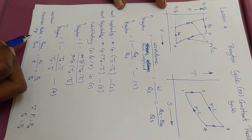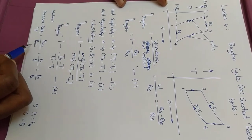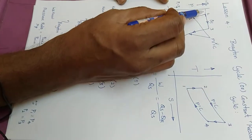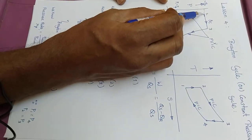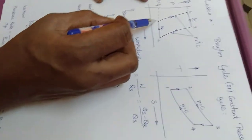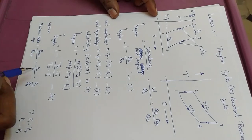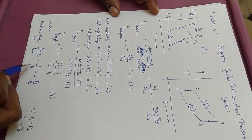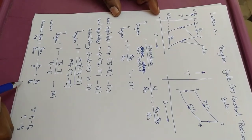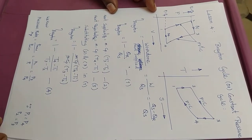Now let us try to bring this expression in terms of the pressure ratio. The pressure ratio is the ratio between maximum pressure and minimum pressure during the cycle. The maximum pressure is P2, and P2 is also equal to P3. The minimum pressure is P1, and P1 is also equal to P4. Therefore, pressure ratio is P2 by P1, which is also equal to P3 by P4.